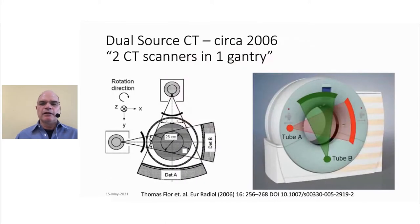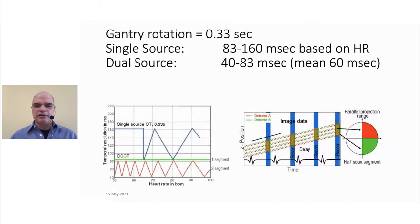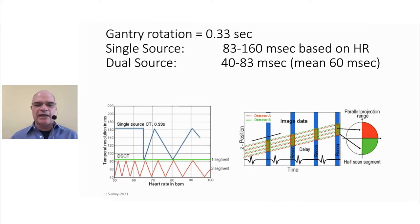In 2006 came the advent of the dual-source CT, which is effectively two CT scanners within one gantry — an A tube and A detector, and a B tube and B detector. This two-CT-in-one allows us to gain dramatically in temporal resolution compared to a single tube-detector combination. With a single-source CT scanner rotating very quickly at 0.33 seconds per rotation, the max temporal resolution is between 83 and 160 milliseconds. Today, with even faster gantry speeds, we routinely image the heart at 66 milliseconds per image.